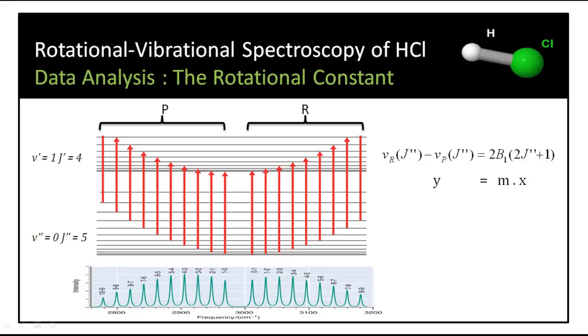We can derive from the energy expression for each transition by subtracting the difference between the P and R transitions for the same rotational energy level J double prime. We'll see that this difference will be equal to an amount which includes the rotational constant B1 bar because we're looking at the first differences in the first vibrational level. We can calculate B1 bar by plotting a range of the differences against 2J double prime plus 1, which would be a straight line, whose slope is 2B1 bar.